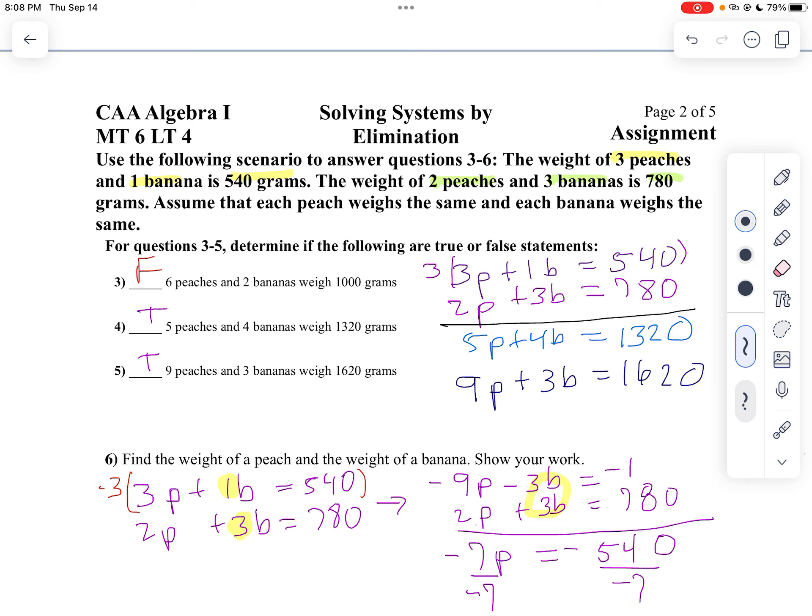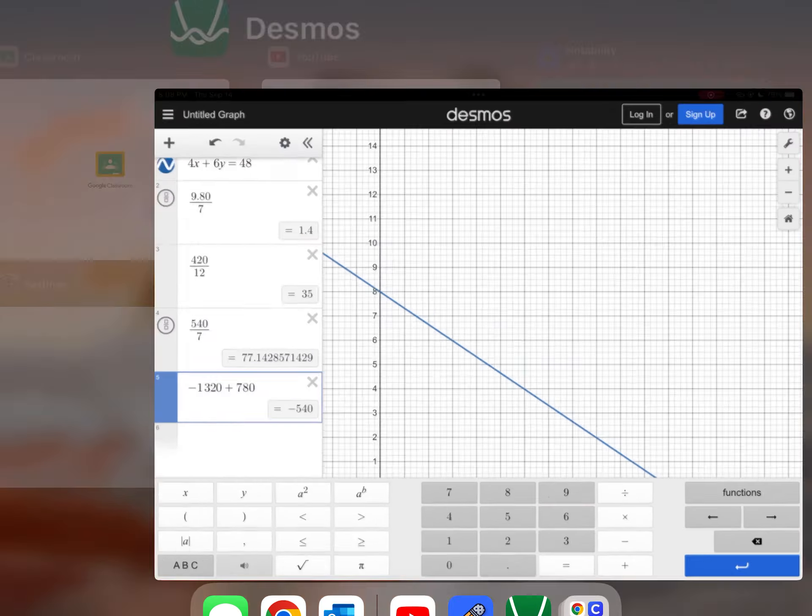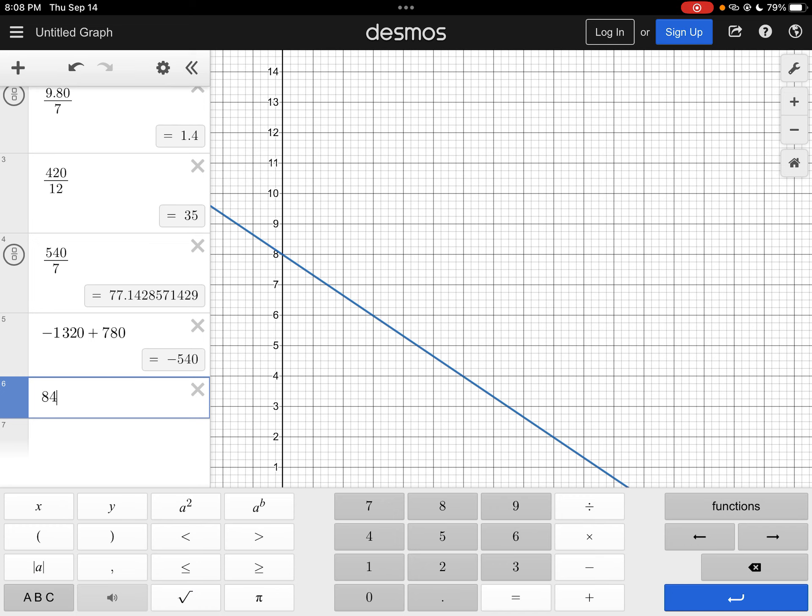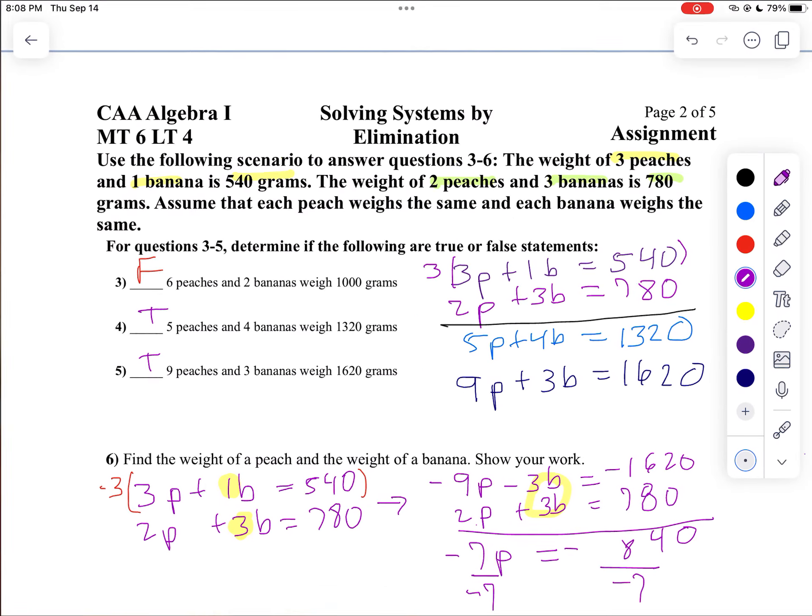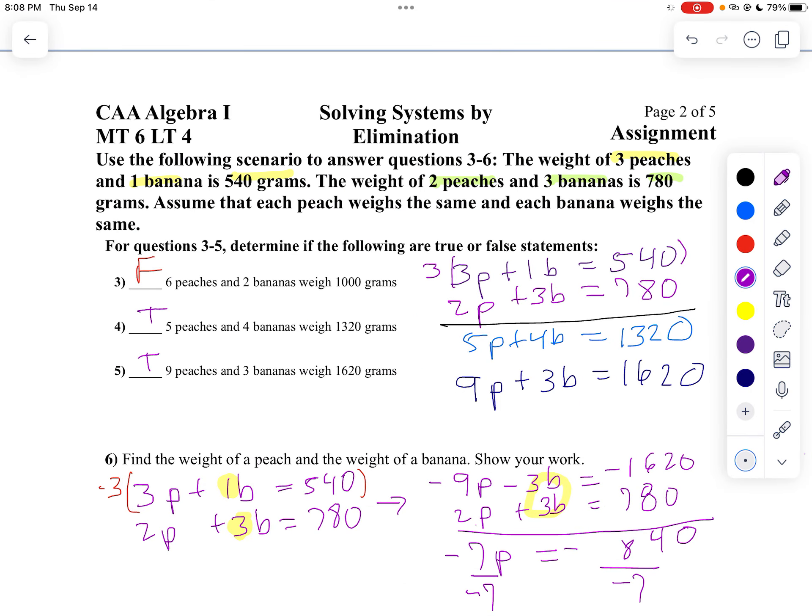Copy down the wrong line. So you get negative 1620. Well, let's try that again. So now, 0 minus 0 is 0, 12 minus 8 is 4, and 15 minus 7 is 8. Now, I'm going to take 840 divided by negative 7. 840 divided by 7 will give me 120. So now, we've got the weight of a peach is 120 grams.